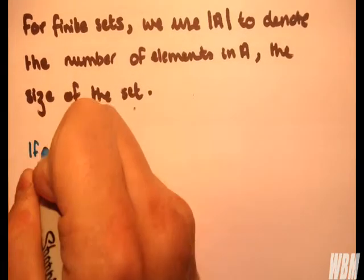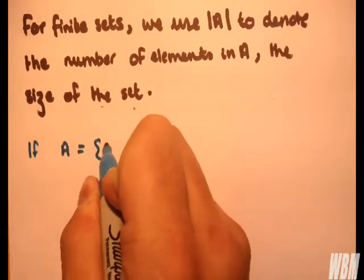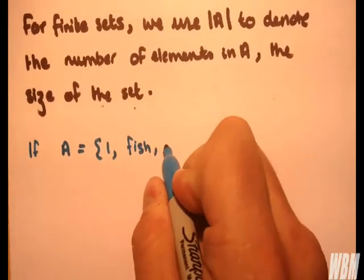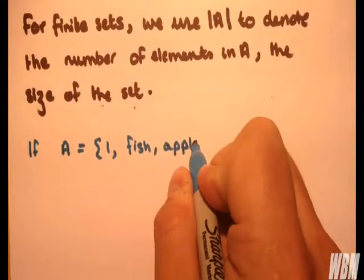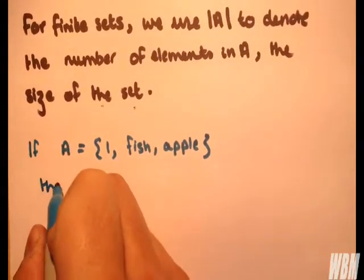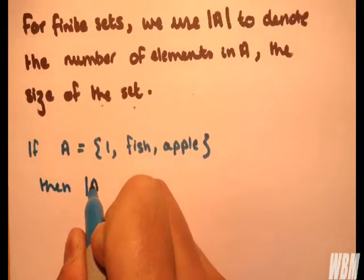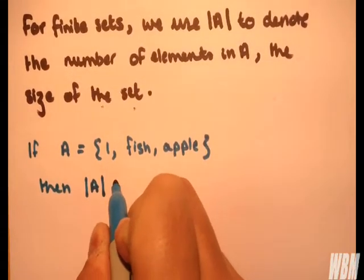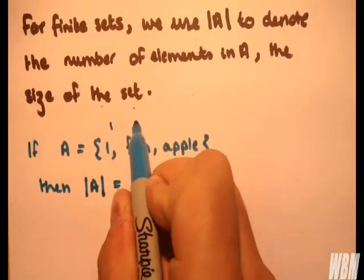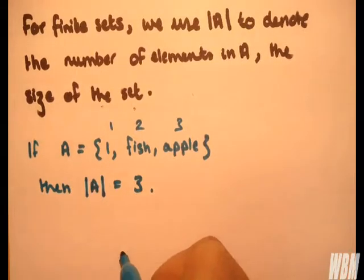For example, if we take set A equal to {1, fish, an apple} — because I'm quite hungry — then the order or the cardinality, whichever word you prefer, is equal to 3, because we have 1, 2, 3 elements in set A.